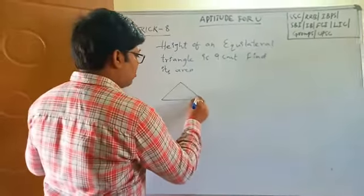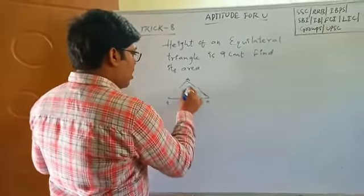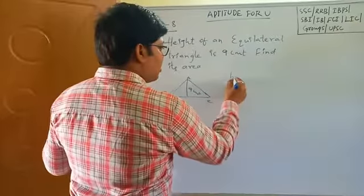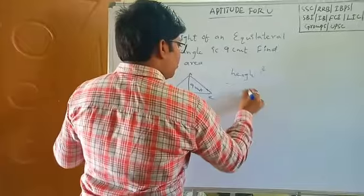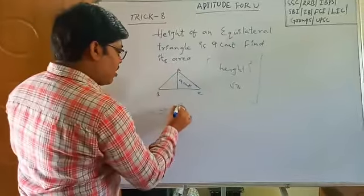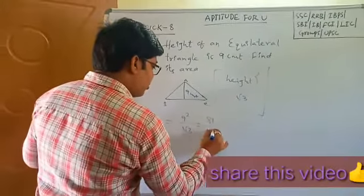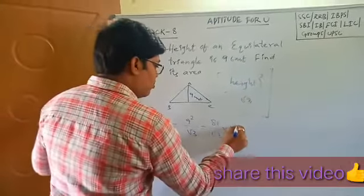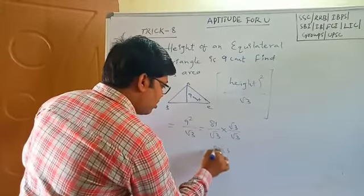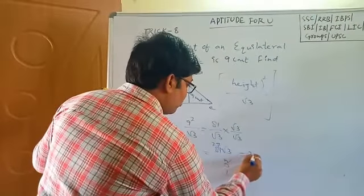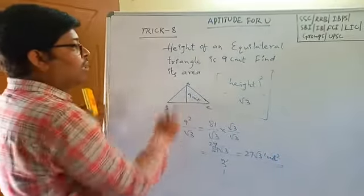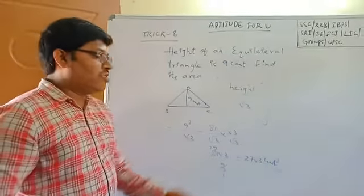Equilateral triangle ABC, height is 9 cm. Using the trick: area equals height squared by root 3. So 9 squared by root 3 equals 81 by root 3. Rationalizing: 81 root 3 by root 3 times root 3 equals 81 root 3 by 3 equals 27 root 3 cm squared. So the area of the equilateral triangle with height 9 cm is 27 root 3 cm squared.